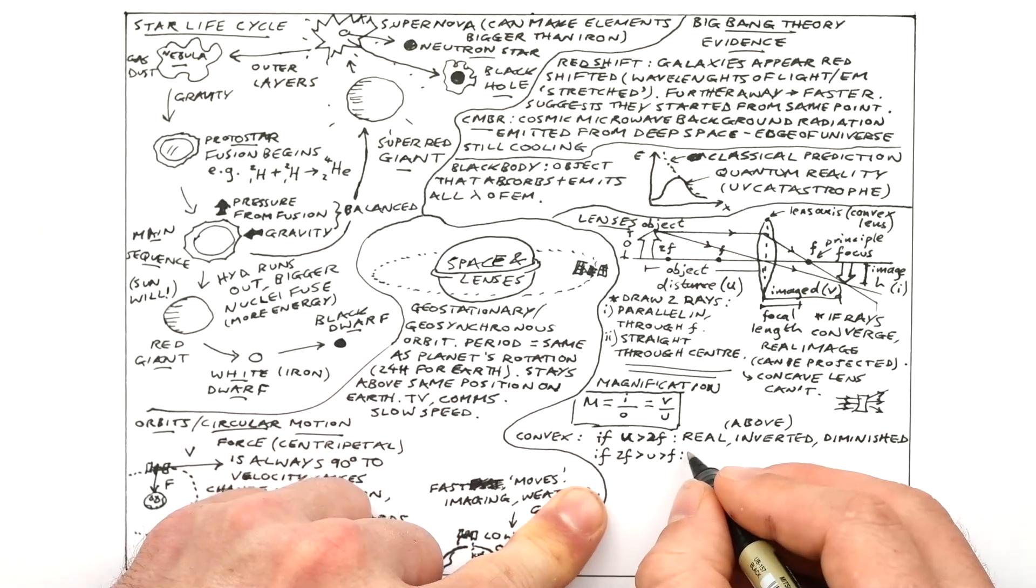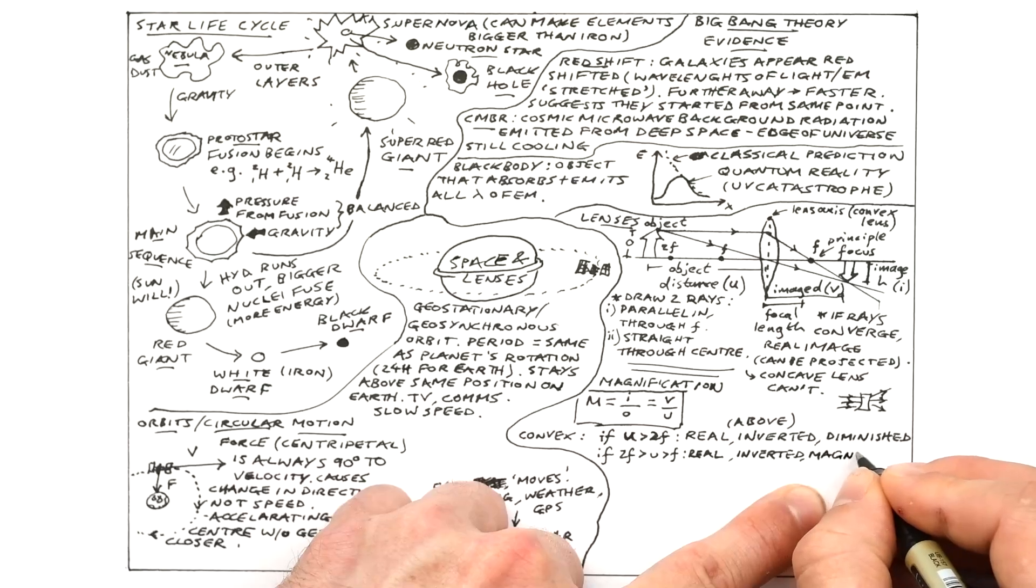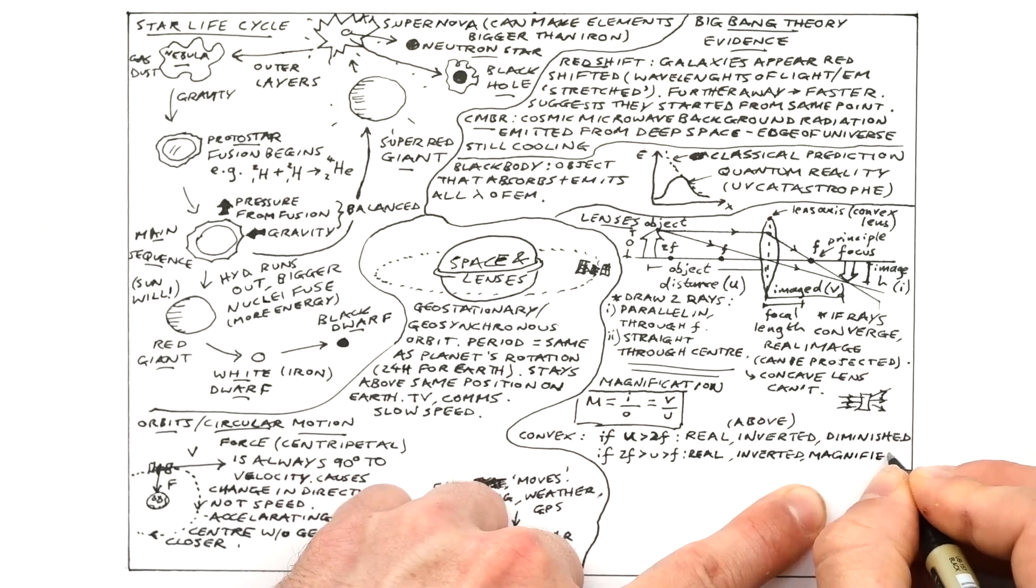However if the object is between F and 2F then we're going to get a real image again. Inverted again. But this time it's going to be magnified. It's going to be bigger.